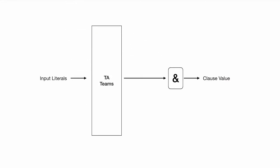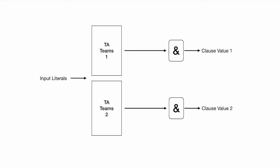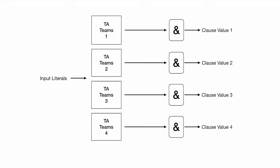we call it TA teams. And if I duplicate this setup, so we have two TA teams. And in this scenario, we have two clause values. They are all independent, but they're sharing the same input literals. And if I further duplicate them, now we can have a four clause system with four TA teams, independent ones, sharing the same inputs.